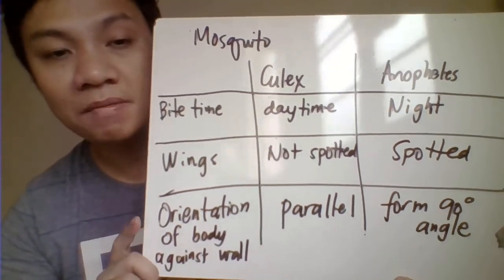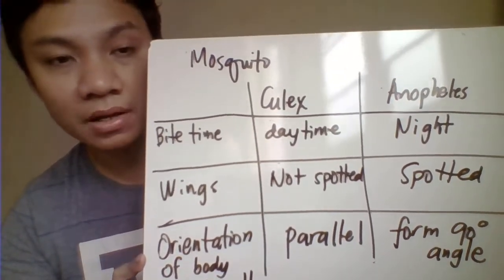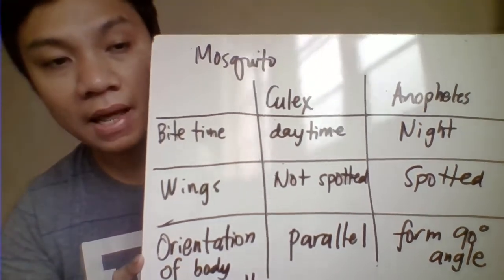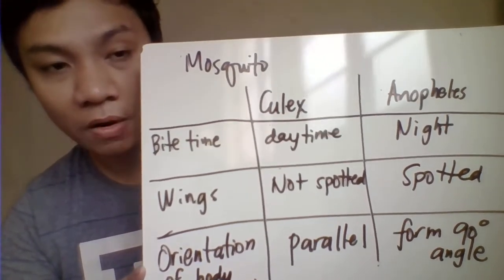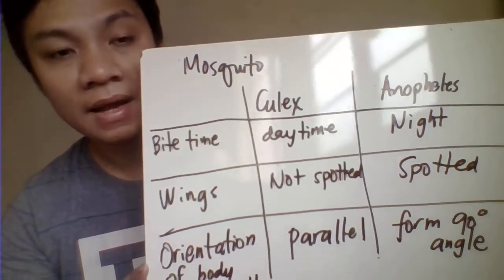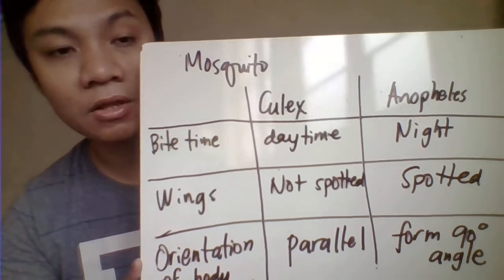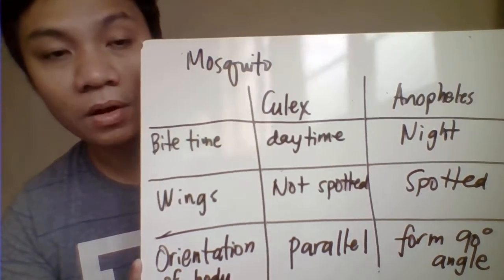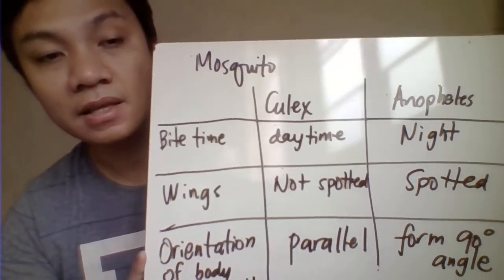Another distinguishing feature is their resting position against a wall. If it is a Culex, it forms a parallel orientation with its body against the wall. Whereas the Anopheles mosquito, when resting against the wall, forms a 90-degree angle with its body.